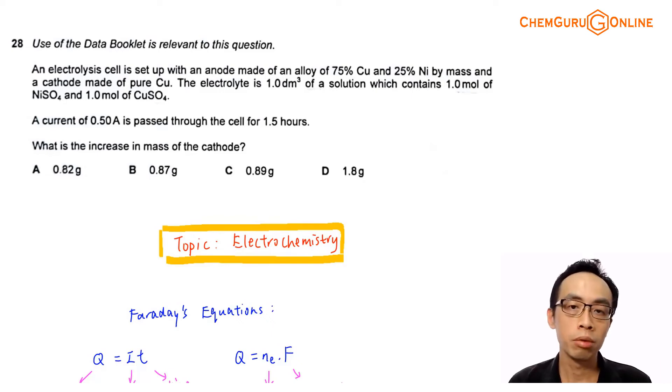Hello everyone, this is Maverick Paul, the chemistry guru. Now in this video, we want to discuss the suggested solution for 2021 A-levels H2 chemistry, paper 1, question 28.